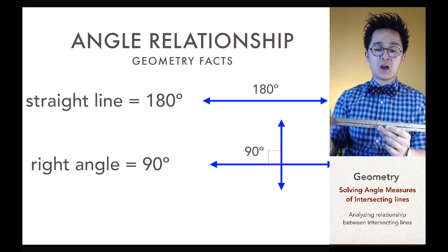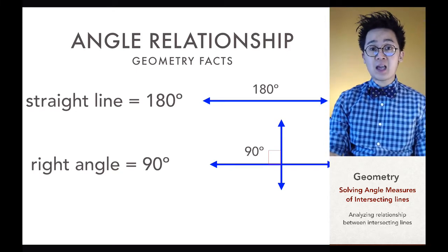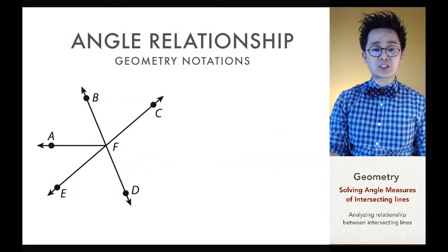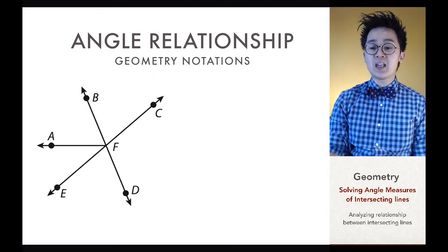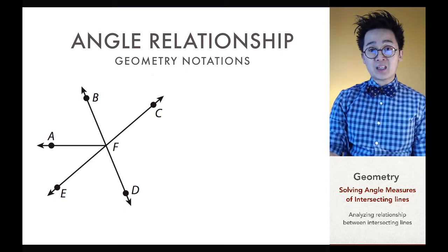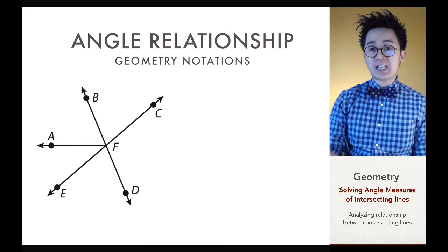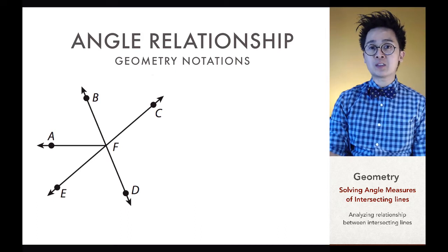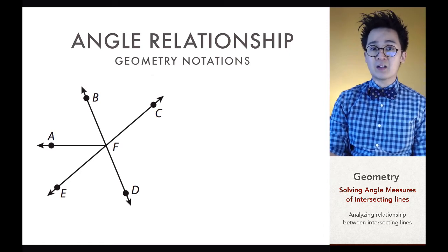These two geometry facts will be helpful in understanding how to solve problems involving the relationship of angles in intersecting lines. Now, take a look at this diagram. There are several letters, dots, and arrows, and to understand geometry — math is like a foreign language — you need to know how to read the symbols we use in mathematics. Today we're going to use geometry symbols to denote angles, lines, and geometric figures.